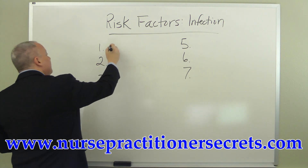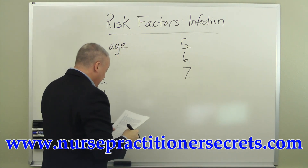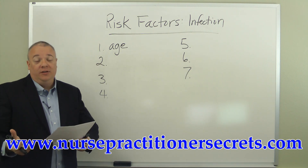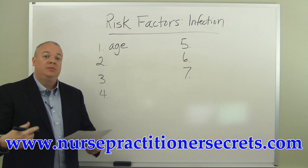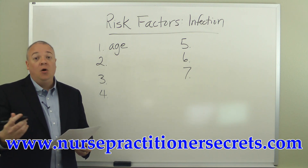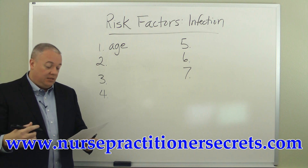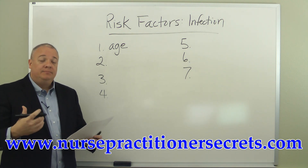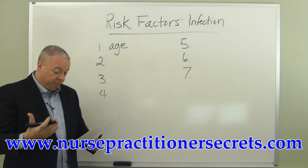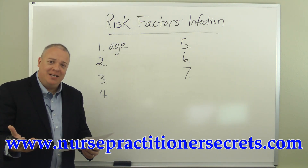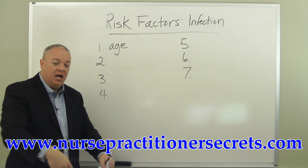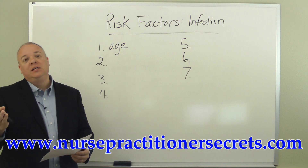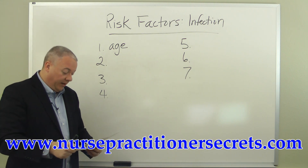The first one we're going to talk about is age. The very young or the very old are at greater risk of infection. The young because they may not have yet developed sufficient antibodies, and the old due to decreased immunity because of their advanced age. Their system is not working at full capacity, and because of this — very young, very old — it leads to an increased risk of infection.